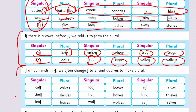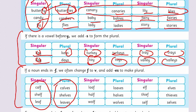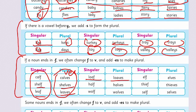Now look at the fourth one. If a noun ends in F, we often change F to V and add ES to make it plural. The last letter is F, so we add VES at the end to make it plural. Like: calf → calves, shelf → shelves, leaf → leaves, loaf → loaves.